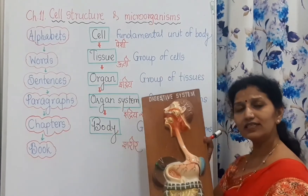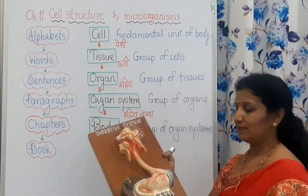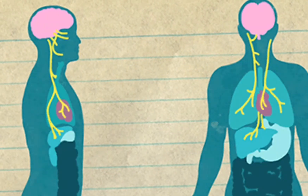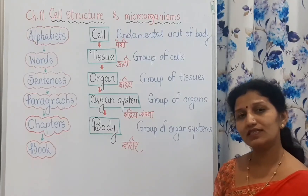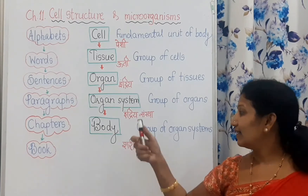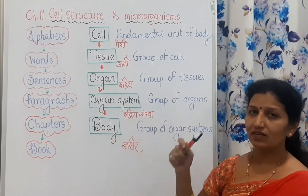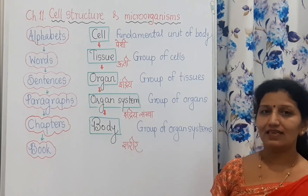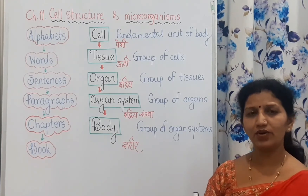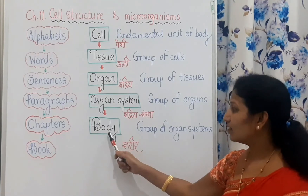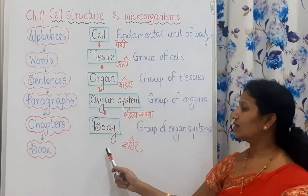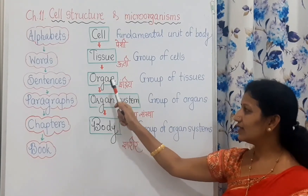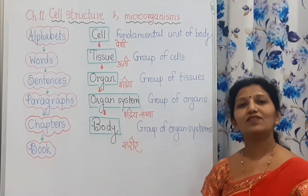There are many systems, like the digestive system, respiratory system, nervous system, reproductive system, excretory system, circulatory system, skeletal system, and muscular system. All these systems come together to form our body — whether it is a plant or an animal. In animals, the structural organization goes: group of cells → tissue → group of tissues → organ → group of organs → organ system → group of organ systems → body.